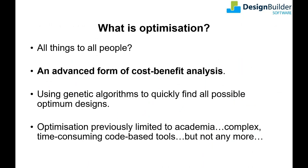People hear the word optimization all the time but it's used in very different ways and can mean very different things. Optimization is often used to describe relatively minor or incremental improvements on an existing design — that is definitely not the context for this presentation. What we're presenting today is multi-criteria analysis using a genetic algorithm in an automated process that finds optimal design solutions for you. Optimization is an advanced form of cost-benefit analysis. Until fairly recently this kind of analysis was only possible within academia, involving time-consuming code-based tools not viable for commercial use.